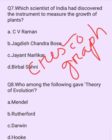Who among the following gave the theory of evolution? Options are: Mendel, Rutherford, Darwin, Hooke. The answer is option C: Darwin.